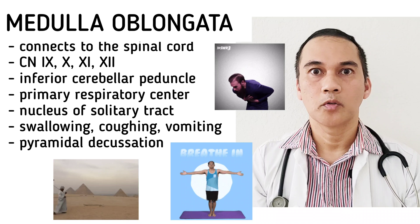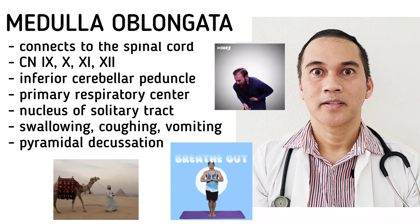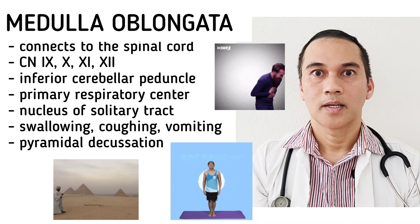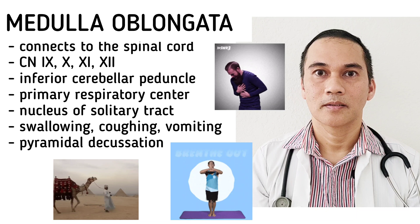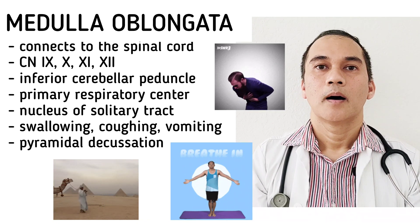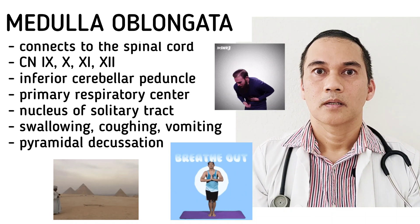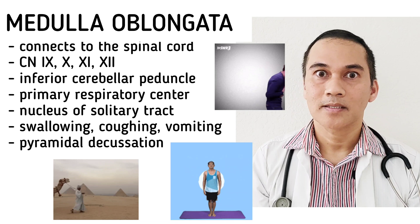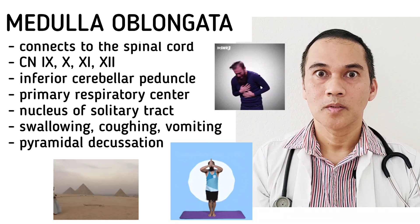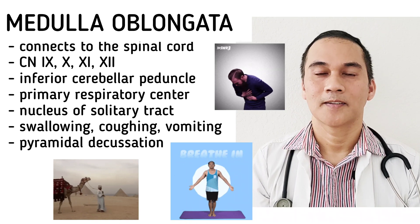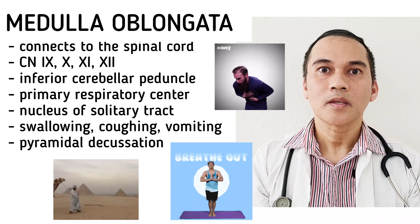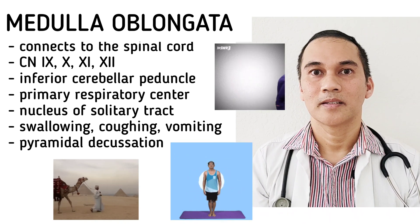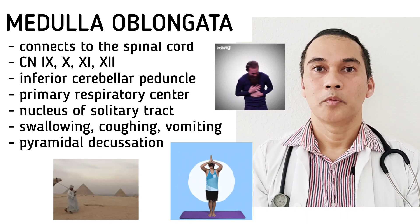The inferior part of the brainstem is the medulla, or medulla oblongata. This part directly connects to the spinal cord at the foramen magnum. Four cranial nerves originate from the medulla: cranial nerve 9, the glossopharyngeal; number 10, the vagus; 11, the spinal accessory; and 12, the hypoglossal. The medulla also has the nucleus of the solitary tract, which detects CO2, O2, and heart rate, and will try to correct them if too high or too low. It is the primary breathing center, as the medulla signals the respiratory muscles to breathe in and breathe out.